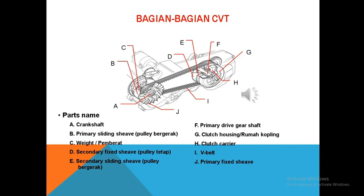Yang keenam adalah Primary Drift Gear. Primary Drift Gear berfungsi sebagai penerus putaran dari good hose ke gearbox.